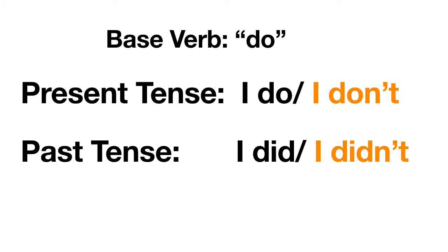The base verb in 'I do,' 'I don't,' 'I did,' and 'I didn't' is 'do.' Remember the base form — the form we look up in the dictionary, the form that has nothing added to it. Here in the present tense, the proper form in the first person: 'I do,' 'I don't.' That's the present simple tense.